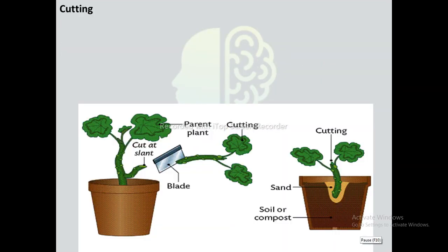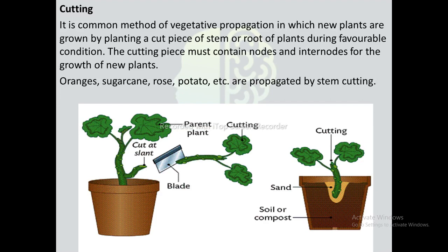Cutting: It is a common method of vegetative propagation in which new plants are grown by planting a cut piece of stem or root of plants during favorable conditions. The cutting piece must contain nodes and internodes for the growth of new plants. Oranges, sugarcane, rose, potatoes, etc. are propagated by stem cutting.